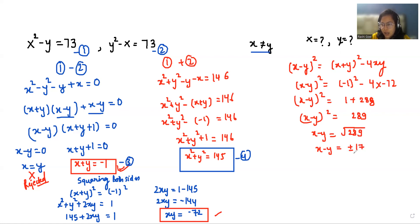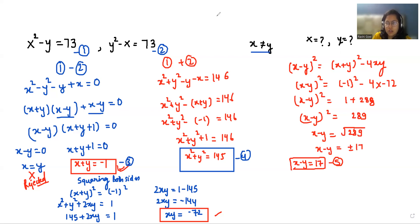So we'll consider the positive root first. Our equation is x minus y equals 17. We have the value of x plus y from equation number 3 as minus 1, and x minus y is 17. I'm considering this as equation 5. Now I'm going to add both equations: x plus y plus x minus y equals minus 1 plus 17. So 2x equals 16, and x equals 8.